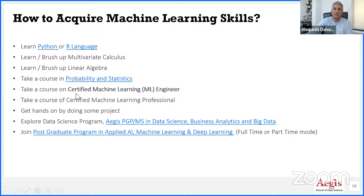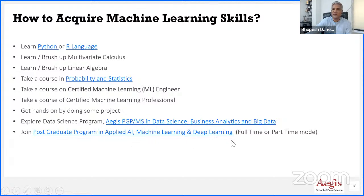You can also take up a course offered by Aegis — the Certified Machine Learning Engineer course, which gives you exposure to Python, machine learning, ML over Azure and AWS, deep learning, and CNN with a lot of practical exposure in a four-month program. You can also explore the PGP in Data Science, Business Analytics, and Big Data, or the Applied PGP in Applied AI, Machine Learning, and Deep Learning, which covers additional AI components.